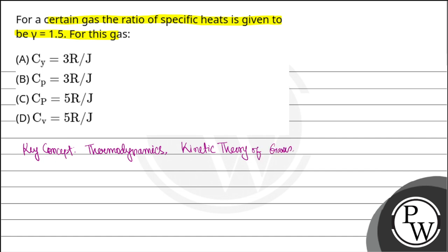So, here we have to get one thing in our mind, that is the universal relation for an ideal gas. Cp minus Cv is going to be R.